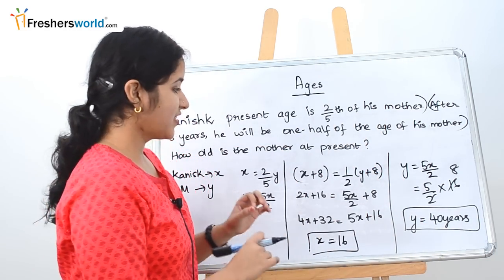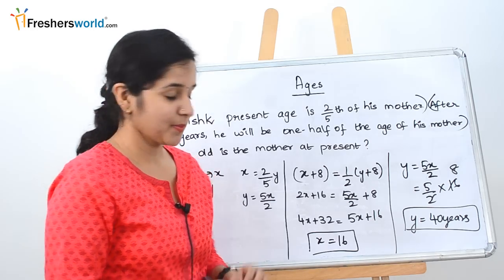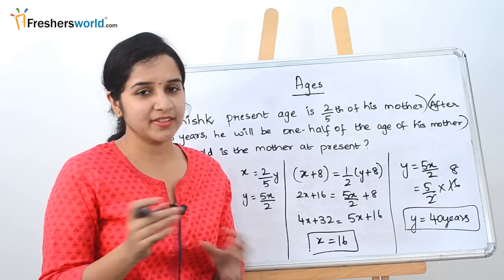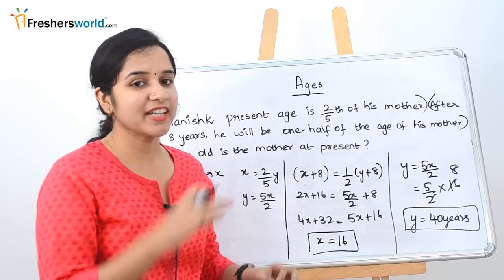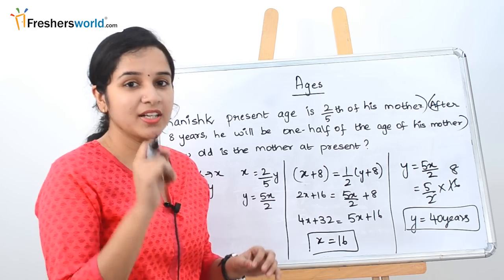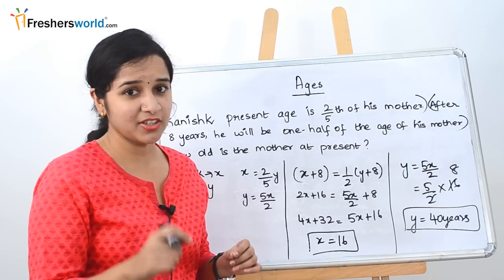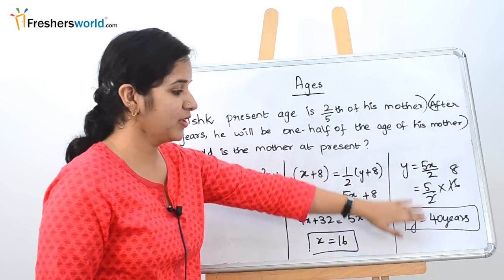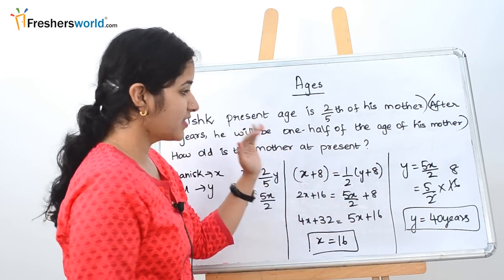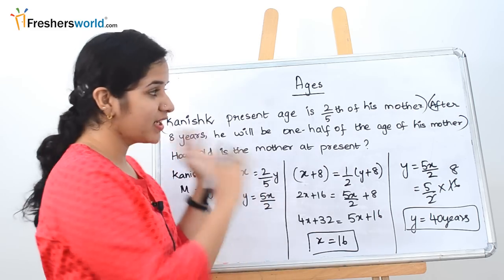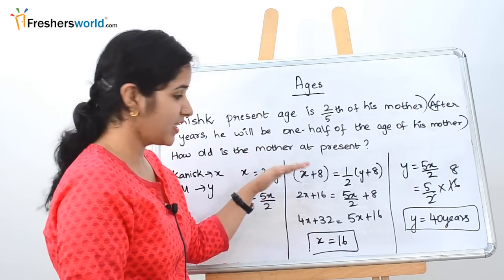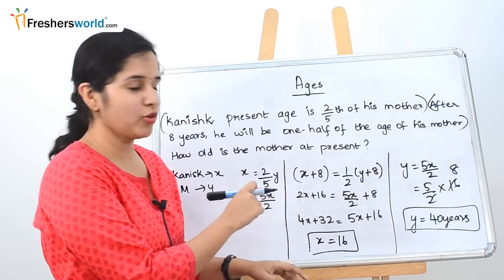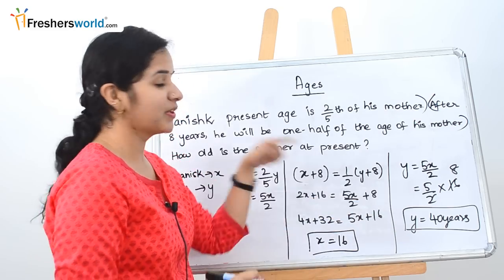This is where people go wrong. The question is not asking for Kanish's age. People stop at x = 16, and since 16 may also appear as an answer option, they pick it and move on. But read the question carefully — they are asking for the mother's age. You need to solve for y to get 40 years. Always read the question first, check whether your equation matches it, and after finding the answer, read the question once more to confirm.